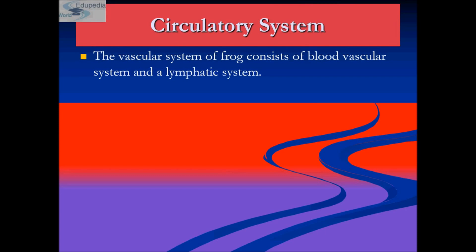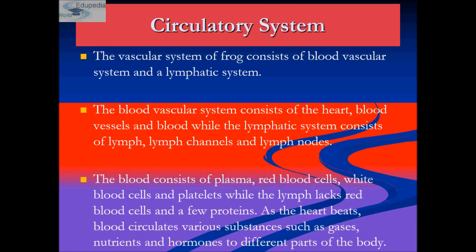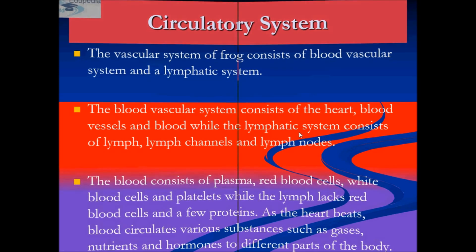The vascular system of the frog consists of the blood vascular system — heart, blood vessels, and blood — and the lymphatic system — lymph, lymph channels, and lymph nodes. Frog RBCs are nucleated, unlike human RBCs which are enucleated. Blood consists of plasma, RBCs, WBCs, and platelets, while lymph lacks red blood cells and few proteins. As the heart beats, blood circulates gases, nutrients, and hormones to different parts of the body.